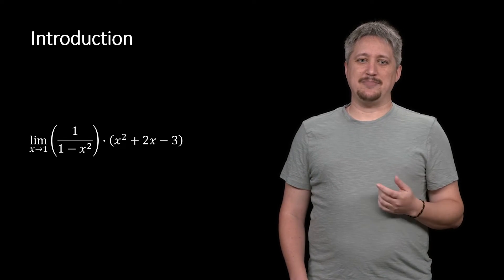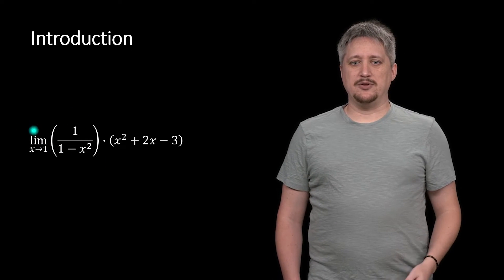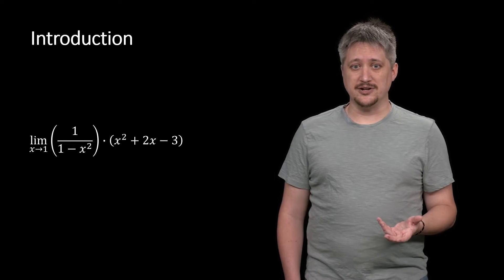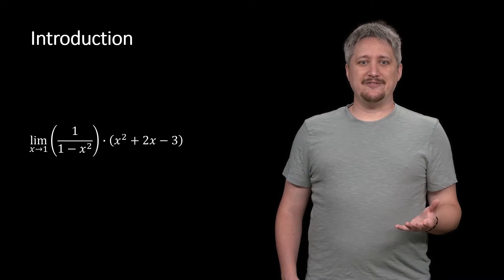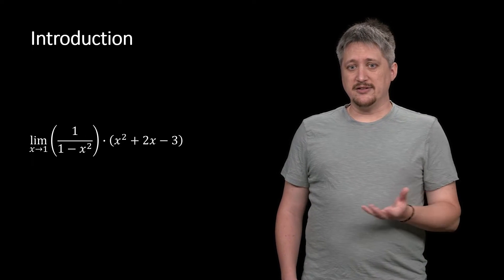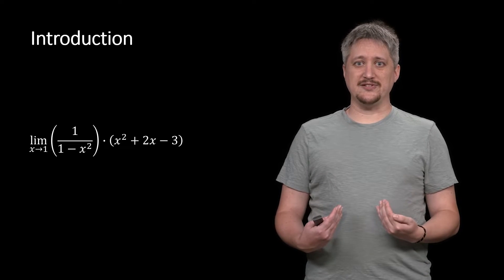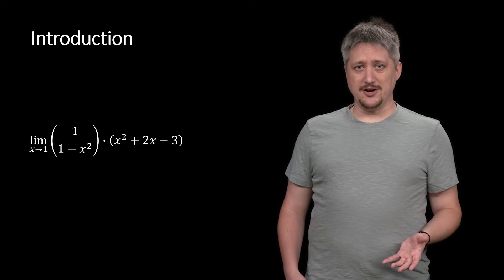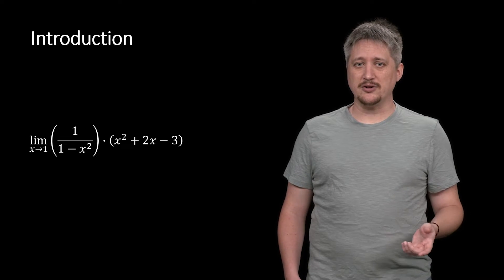Dividing by something really, really small makes it really, really big. So on the one hand, that piece is going to something infinitely large. But at the same time, if I plug 1 in over here in this other piece, I get something getting really, really small — it's going to 0 — because if I plug in 1, I get 1 plus 2 minus 3, which goes to 0. So on one hand I have something getting really large, on the other hand something getting really small, and I'm trying to multiply those together. I can't split this up because I have a non-defined piece here — I can't use my product rule.